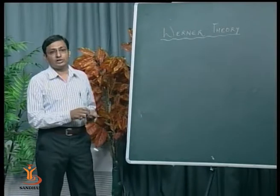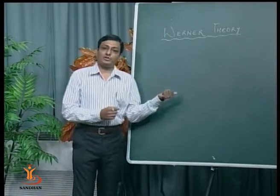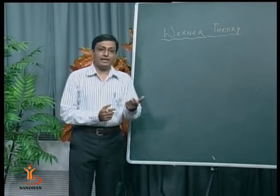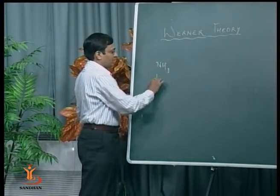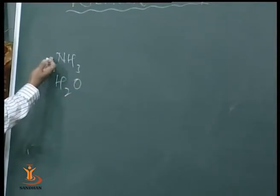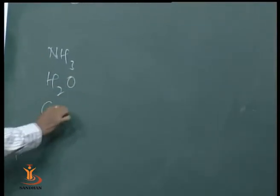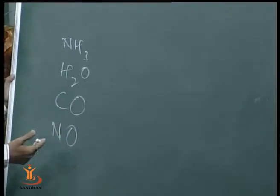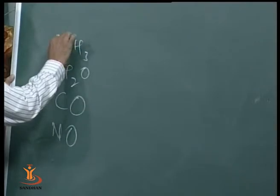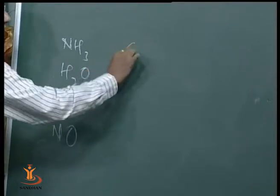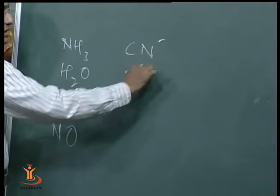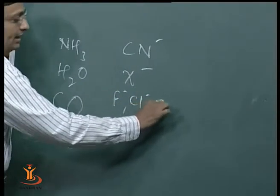Now we discuss the types of ligands. A ligand which donates only one lone pair of electrons and forms a single coordinate bond with a metal ion is called a monodentate ligand. Examples of monodentate neutral ligands include NH₃, H₂O, carbonyl, and nitrosyl. Monodentate anion ligands include cyanide ion and all halogens — fluoride, chloride, bromide, etc.